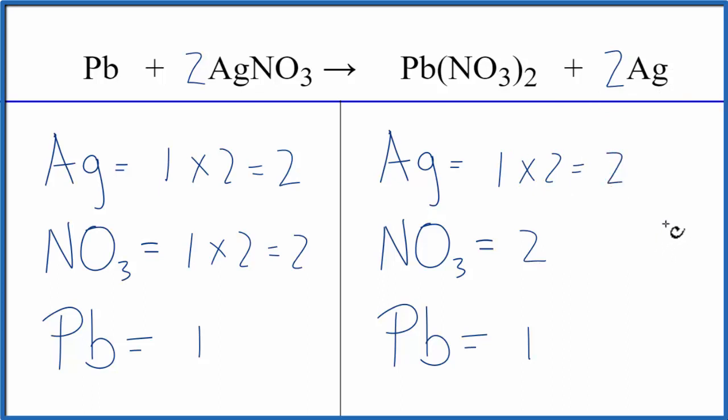This equation is balanced. When you have a polyatomic ion that appears on both sides of the equation, it's often a lot easier just to count it as 1 item.